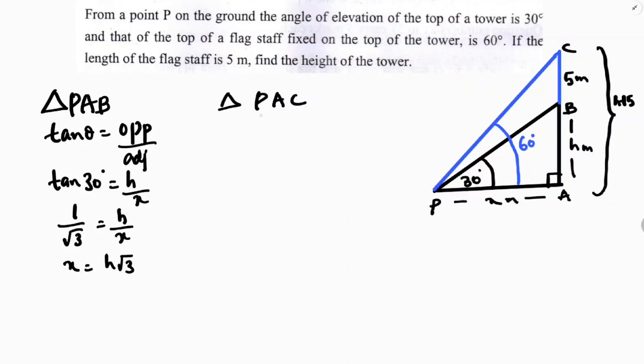Now, if you take the triangle PAC. In this, the angle is 60 degrees. But, opposite will be like h plus 5 now. h plus 5 by x. Adjacent is x. So, tan 60° is root 3. h plus 5 by x. So, root 3 x equals h plus 5.